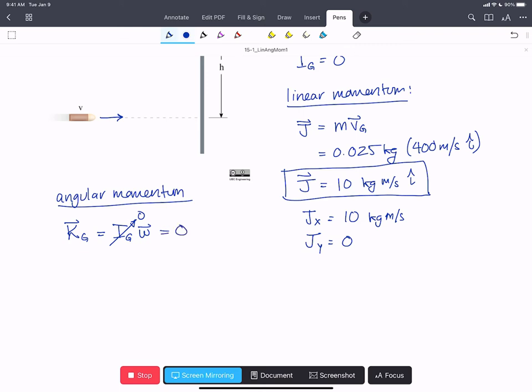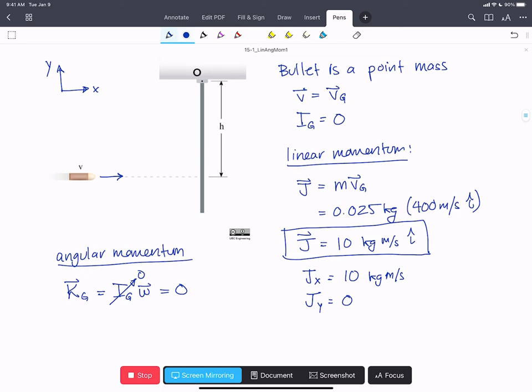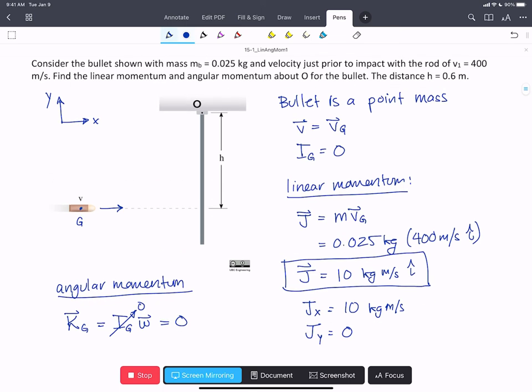But we're not asked for the angular momentum about the bullet center of gravity. We're asked for the angular momentum of the bullet about O, just before it impacts, right there.